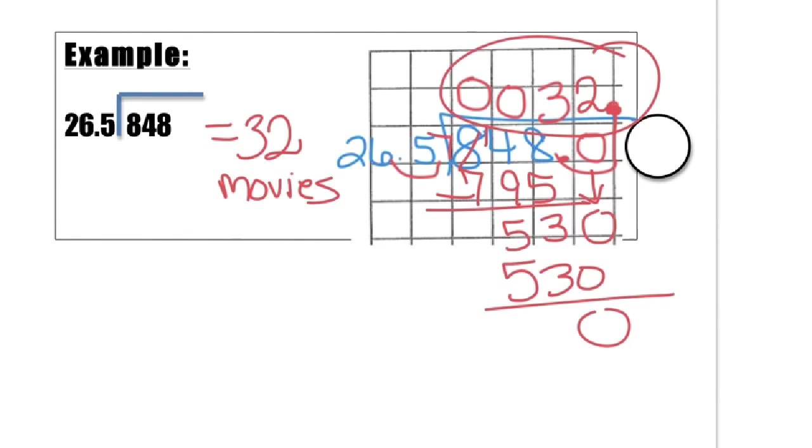So our final answer is 32. So this means that we can place 32 movies on this DVD. Okay? Go ahead and add one more page. And we're going to do one more problem that might end up with a little bit of a crazier answer. So let's just see what we can come up with here.